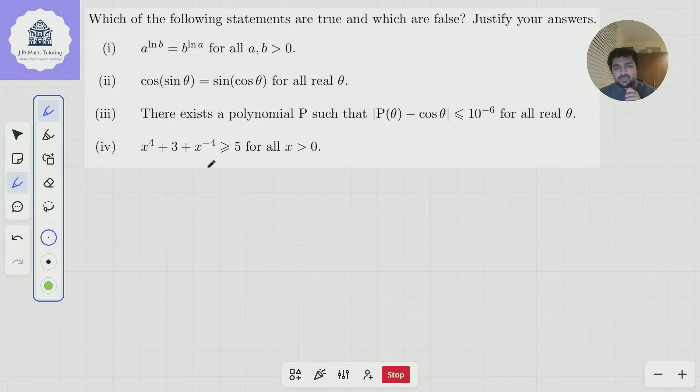And statement 4: x^4 + 3 + x^(-4) ≥ 5 for all x > 0.